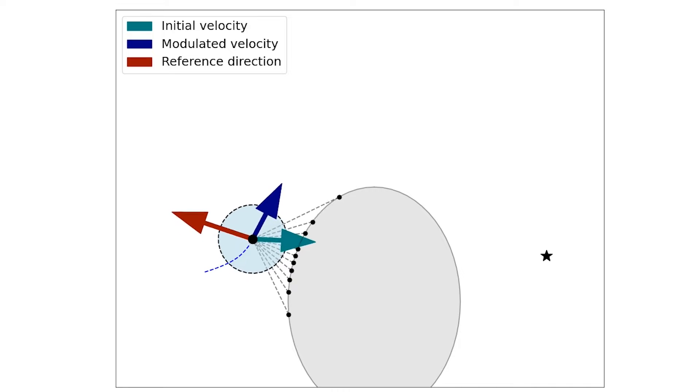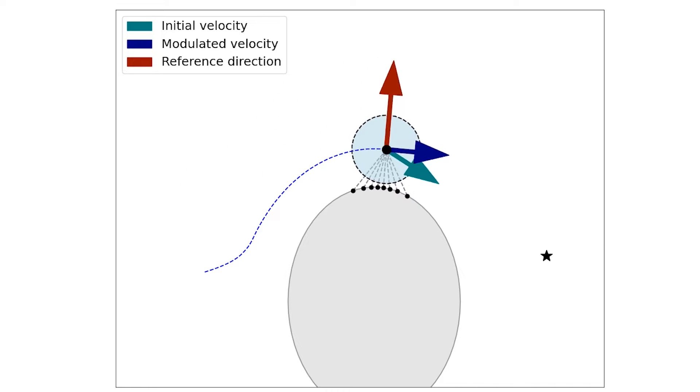These are then used to construct the red reference direction which updates the initial velocity command to obtain a modulated collision-free velocity.